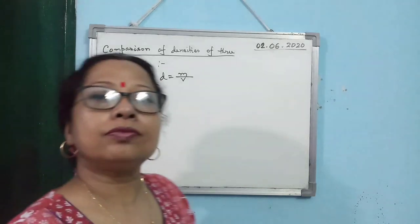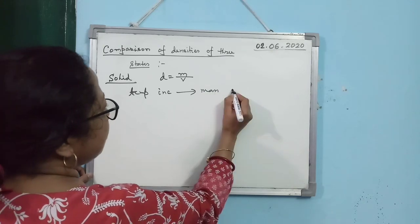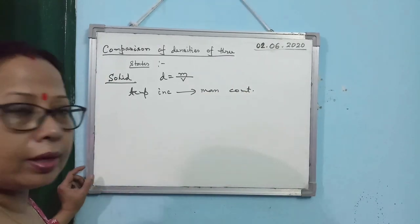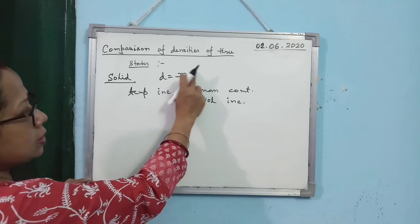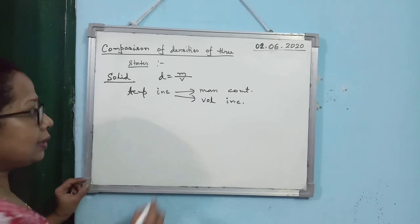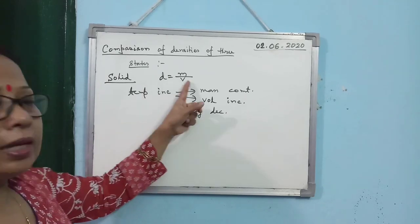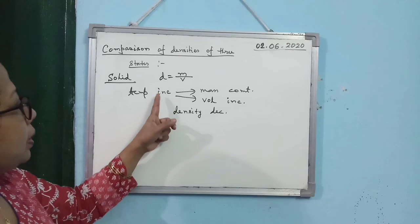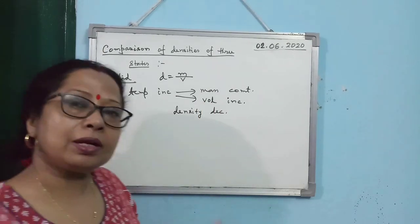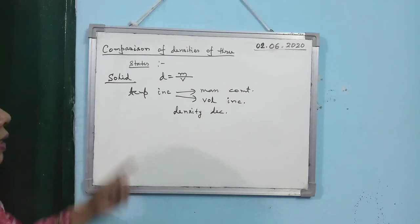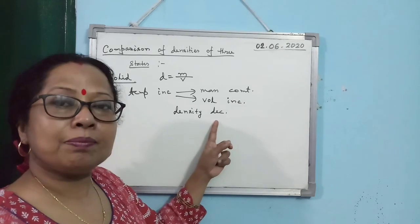Now consider the effect of temperature on density of solids. When you increase the temperature, mass remains constant — mass does not depend on temperature. But volume increases. So if mass remains constant and volume increases, density decreases. The same concept applies to liquid and gas: when you increase the temperature, mass remains the same but volume increases many fold, so density decreases by a larger amount. Whereas for solids, volume does not increase by a large amount, so the decrease in density is not very much.